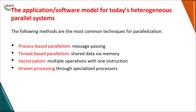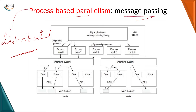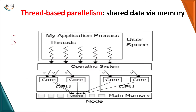Coming to the software models, we have process-based parallelism, thread-based parallelism, vectorization, and stream processing. Process-based parallelism is used for the distributed hardware model — your application has a process which is divided into multiple processes, and the operating system decides which process to execute on which core. Thread-based parallelism corresponds to shared memory architecture — your process is divided into multiple threads and each thread is assigned to a core by the operating system.